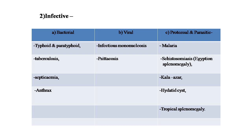Splenomegaly is also found in viral infections such as infectious mononucleosis. The third reason is protozoal and parasitic infection: malaria, schistosomiasis (Egyptian splenomegaly), kala-azar, hydatid cyst, and tropical splenomegaly.